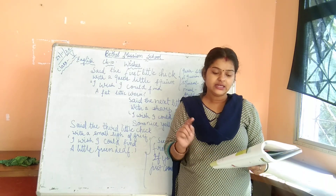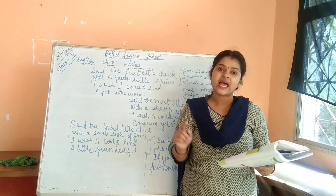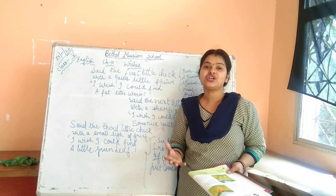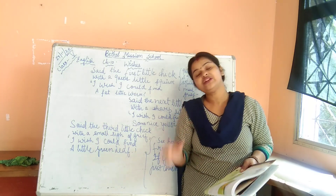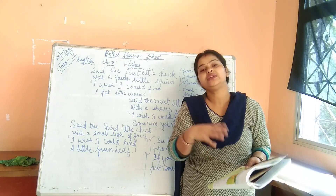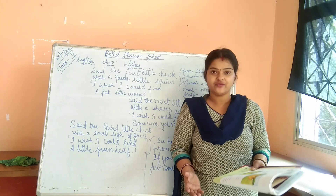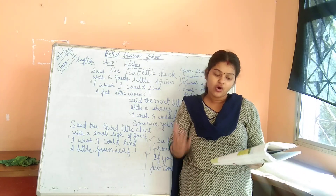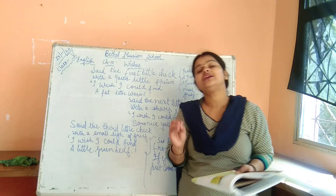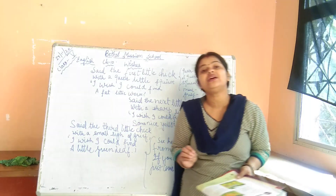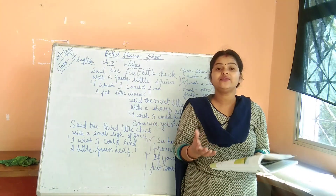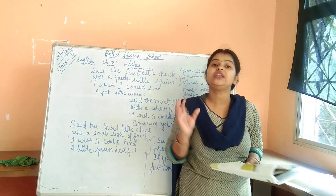The third chick is described as having a small sigh of grief. Now each and every expression in this poem is different — three chicks are having different expressions of hope and wishes. The third one says: 'I wish I could find a little green leaf.' So the third chick is having a wish of getting a green leaf.